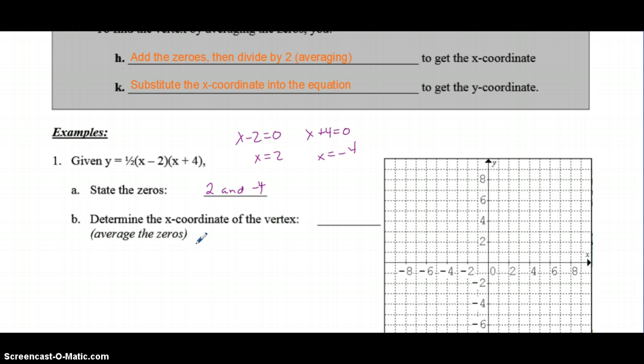Determine the x-coordinate of the vertex. We average our zeros: 2 and negative 4, divided by 2. That gives me negative 2 on top, divided by 2, equals negative 1. So the x-coordinate of my vertex is negative 1. My vertex is going to be somewhere along this line where x is negative 1.